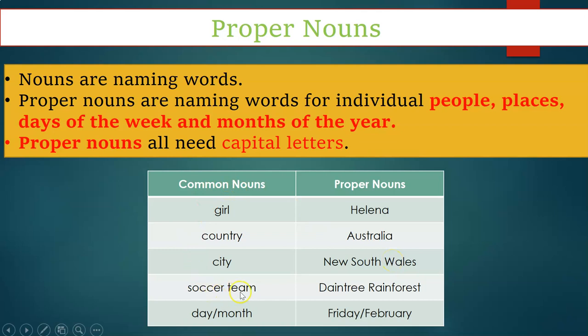For a soccer team or rain forest, we have Daintree Rainforest or other teams you know. For day and month, we have Friday and February — these are all proper nouns that require capital letters.